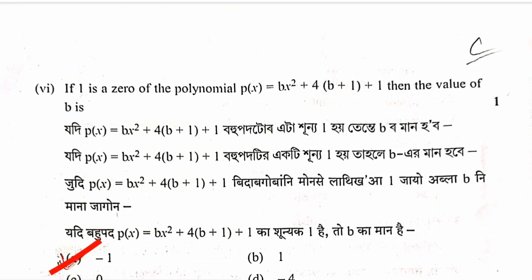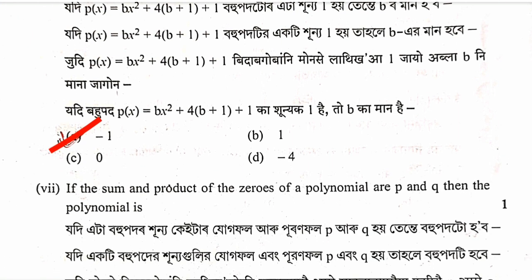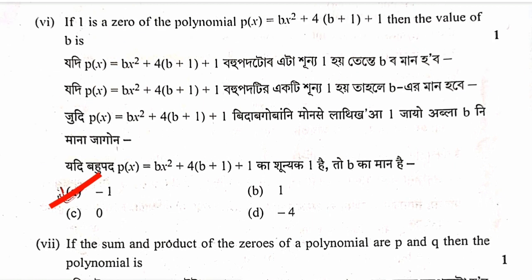Sixth question: If 1 is a zero of the polynomial p(x) equals bx squared plus 4(b plus 1) plus 1, then the value of b is. We substitute x equals 1 into the polynomial to find the value of b.